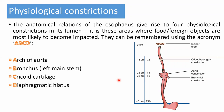The anatomical relations of the esophagus give rise to four physiological constrictions in its lumen. These are the areas where food and foreign objects are most likely to become impacted. They can be remembered using the acronym ABCD: A — the Arch of the Aorta; B — the left main stem Bronchus; C — the Cricoid cartilage; D — the Diaphragmatic hiatus.